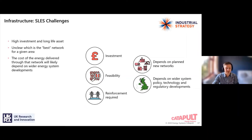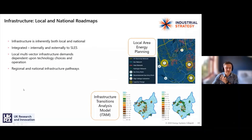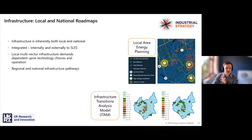Without this coordination and integration, there is a risk that those networks might become more costly. Infrastructure is inherently both local and national — we need it in our local areas to meet peak demands from our home, from the feeder down our street, right up to transmission infrastructure across multiple factors. ESC generally takes a whole-system, multi-scale approach to the representation of infrastructure.